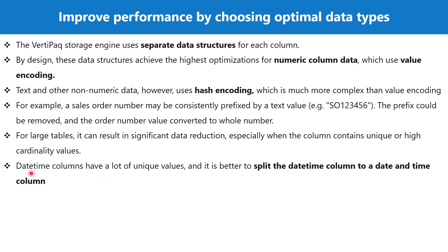Another example is the datetime column. If you have columns with a datetime data type that stores both date and time together, it is better to split the datetime column into a separate date column and a separate time column. This is very important — splitting datetime into date and time reduces the cardinality and improves performance in terms of the encoding applied to each of those columns.